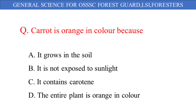Carrot is orange in color because: A. It grows in the soil, B. It is not exposed to sunlight, C. It contains carotene, D. The entire plant is orange in color. And the correct answer is option C: It contains carotene.